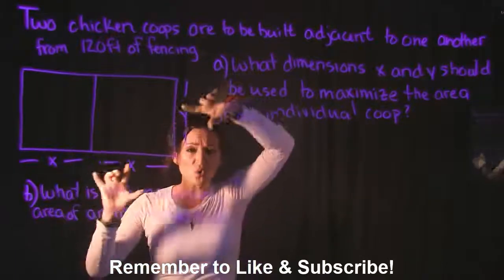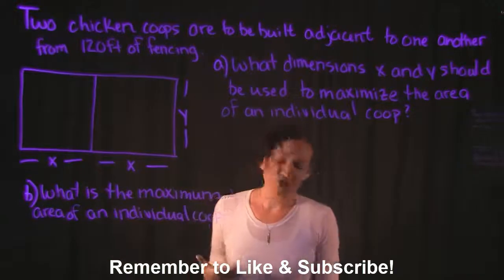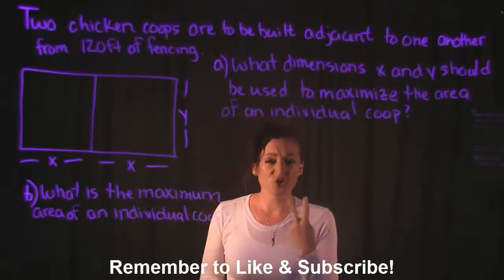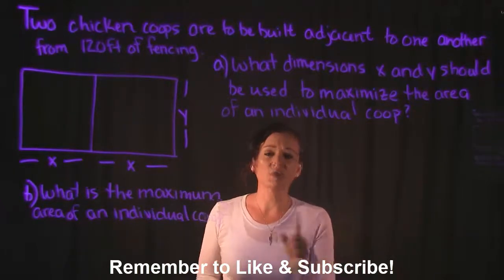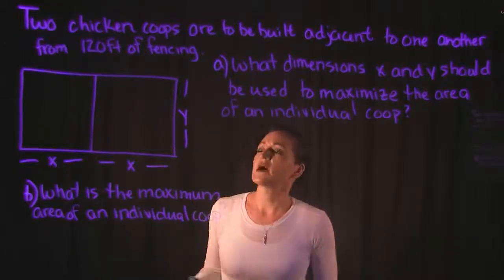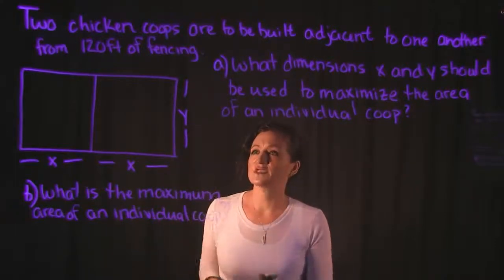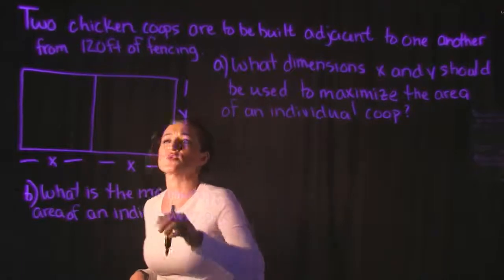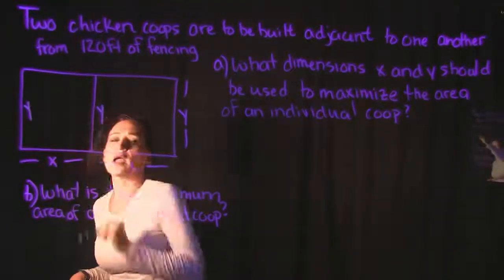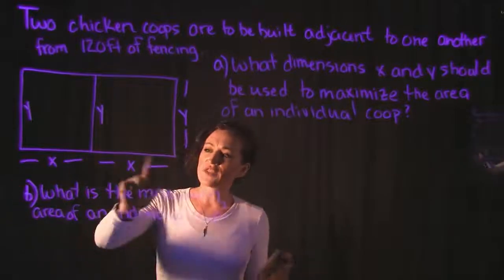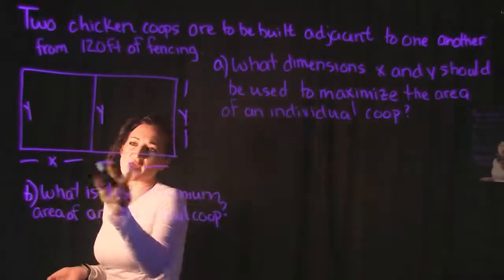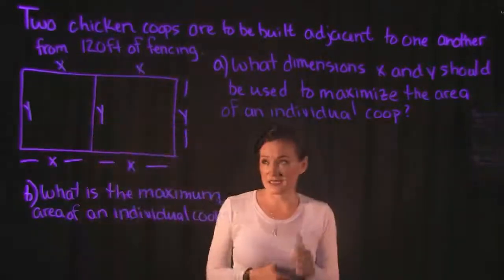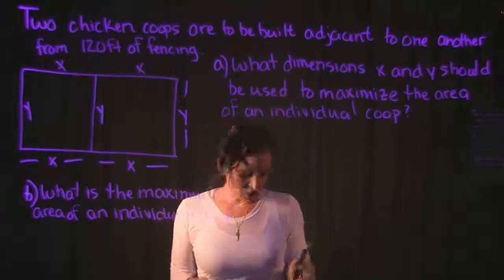We're talking about perimeter and area, so we're going to create two equations based on the given information. Looking at the figure provided, the width is Y — so all of those sides represent Y. The length of the chicken coop is represented by X, so we have X here and X here, which also means the two sides up top are going to be X.